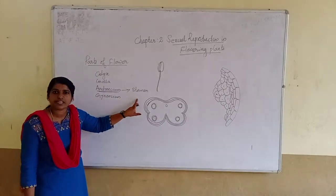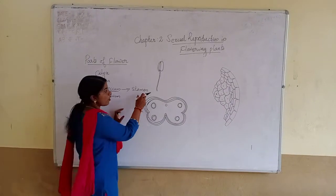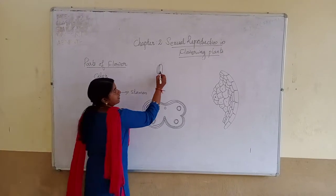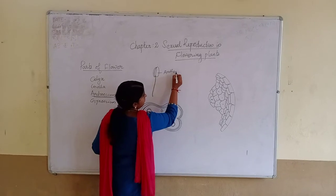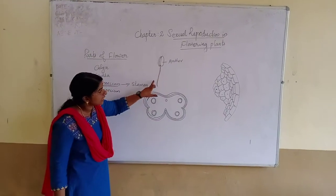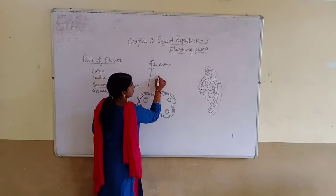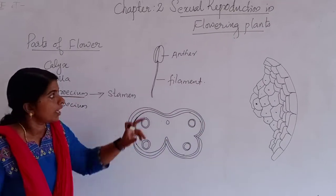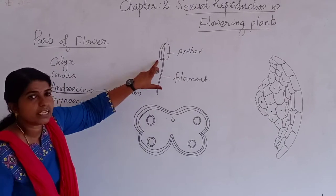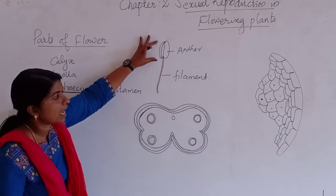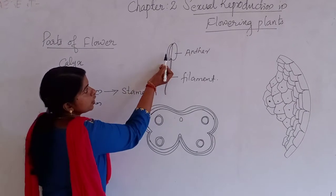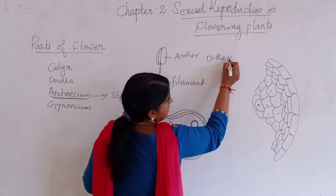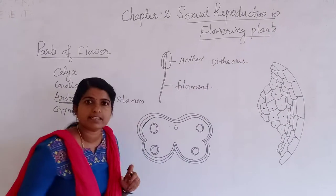The stamen consists of the anther — you can see the bundled part — and there is a filament, which is the stalk-like part. The anther is bi-lobed in nature, having two thecae, so it is known as dithecous.